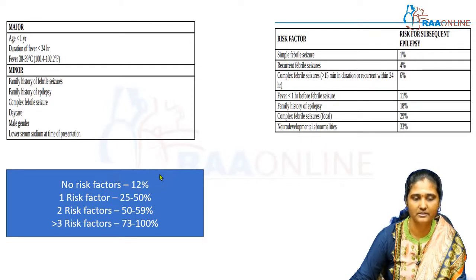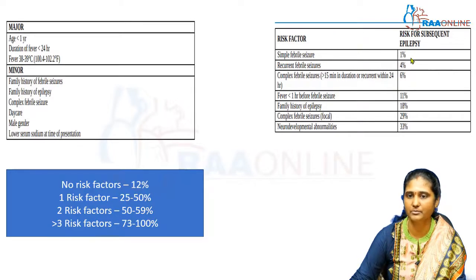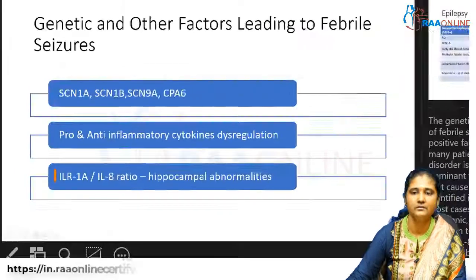This risk assessment is particularly useful during parental counseling, when parents ask whether their child will have similar episodes in the future. Regarding the risk of subsequent epilepsy: a child with simple febrile seizures has only about a 1% risk of developing epilepsy, whereas a child with two focal complex febrile seizures has a risk as high as 29%. This highlights why the classification of febrile seizure type is so important clinically.